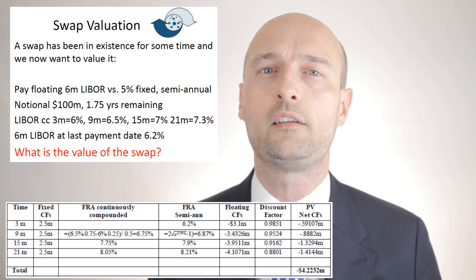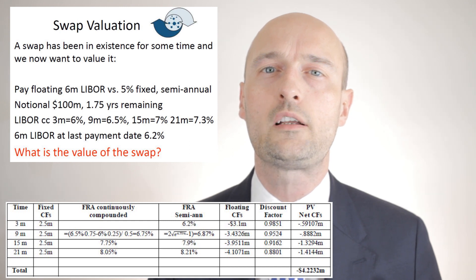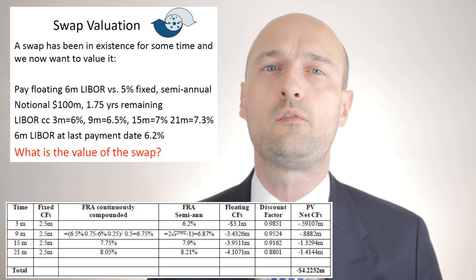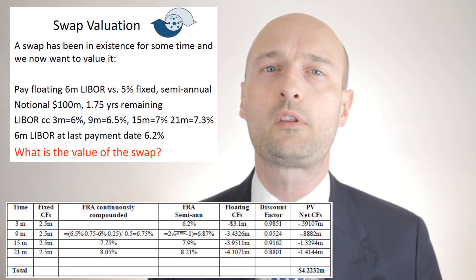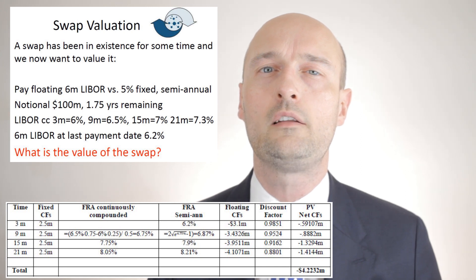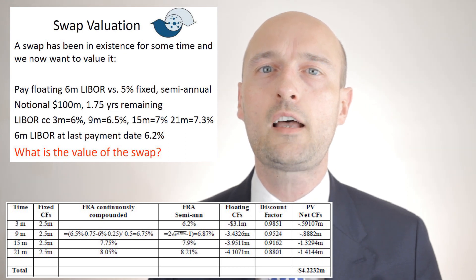The first floating cash flow we know in advance; the remaining ones are calculated by taking the FRA continuously compounded rate and converting it into an FRA semi-annually compounded rate. In the next column we work out the floating cash flows, subtract them from the fixed cash flows, then multiply by the discount rates to get the present value of the net cash flows. Summing the present values of the net cash flows gives us minus $4.22 million — the same result as the bond method.